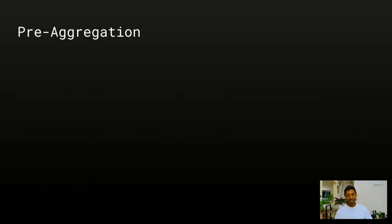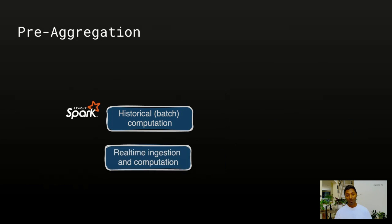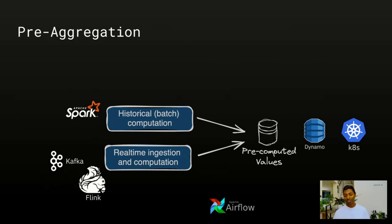The scalable way is pre-aggregation: instead of reading raw order information on every request, you read the counts directly. To build such a system you need two kinds of pipelines — a batch pipeline that looks at all historical orders and creates a count using something like Spark, and a streaming system reading the most recent data with something like Flink, creating a new count for today, storing everything together in a key-value store such as DynamoDB. Then there's a service supplying all this information to the ML service or the prompt, with Airflow for orchestration and Grafana for monitoring. It's a simple metric, but the amount of infrastructure needed is pretty massive.